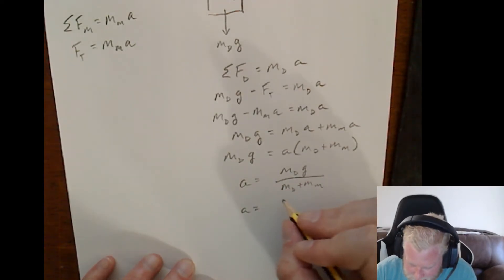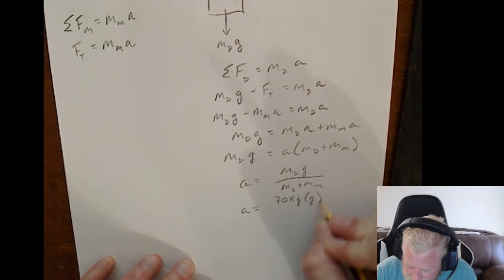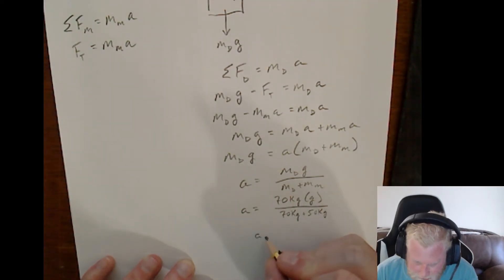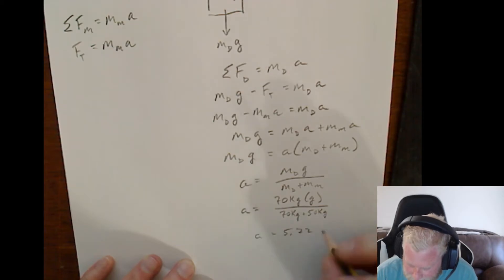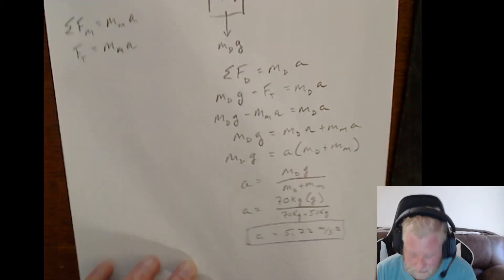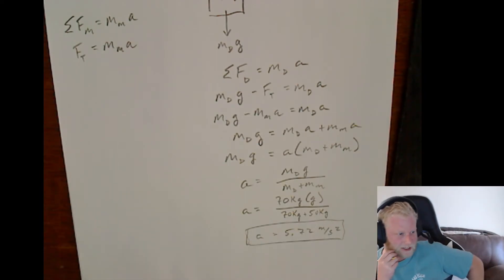So, our acceleration is equal to 70 kilograms times 9.8 meters per second squared over 70 kilograms plus 50 kilograms. You do the math, your acceleration comes out to 5.72 meters per second squared. And that is the acceleration for both Don and Mary.